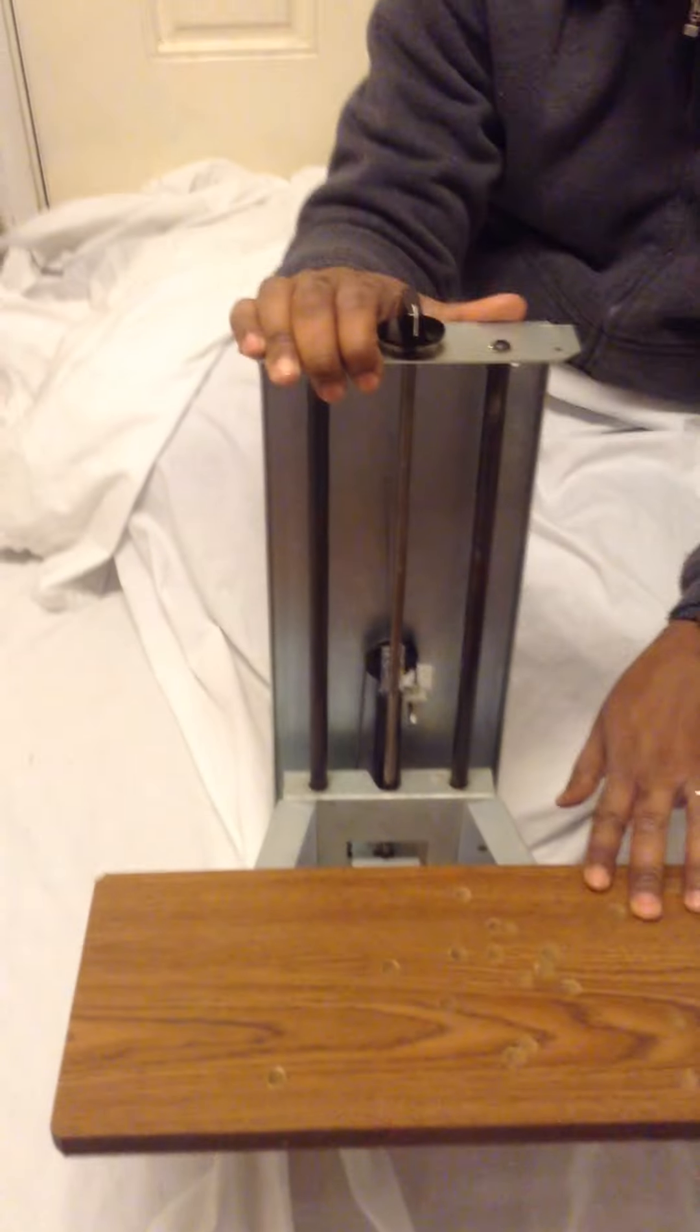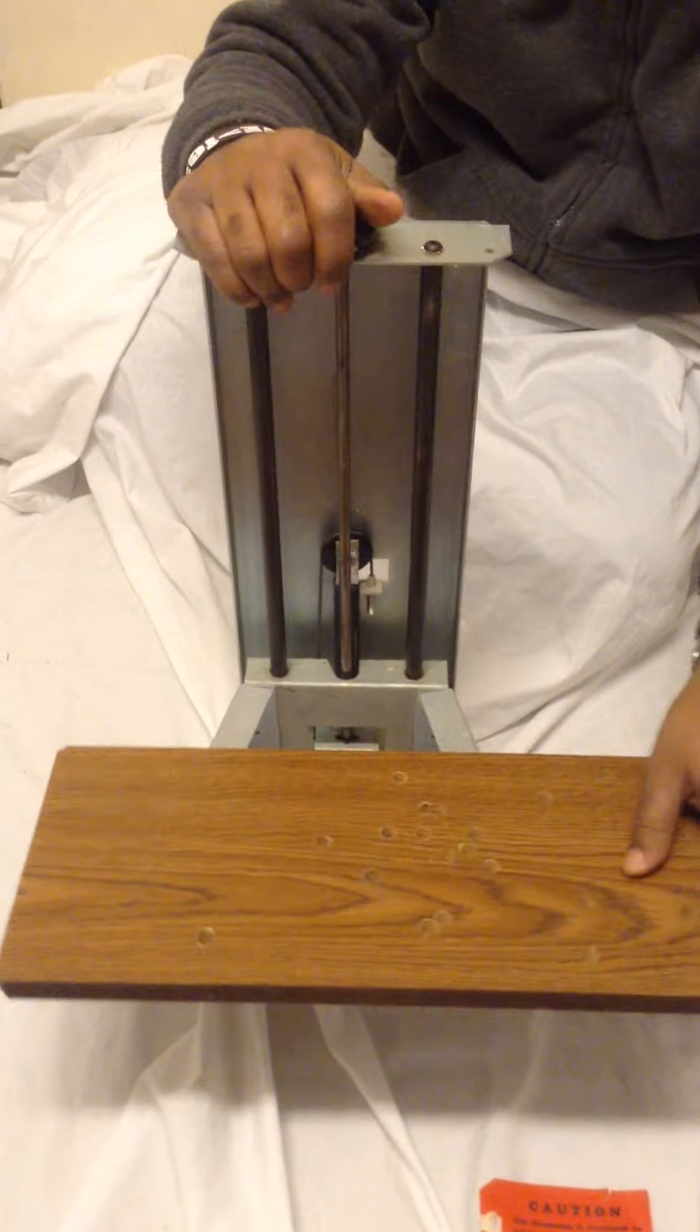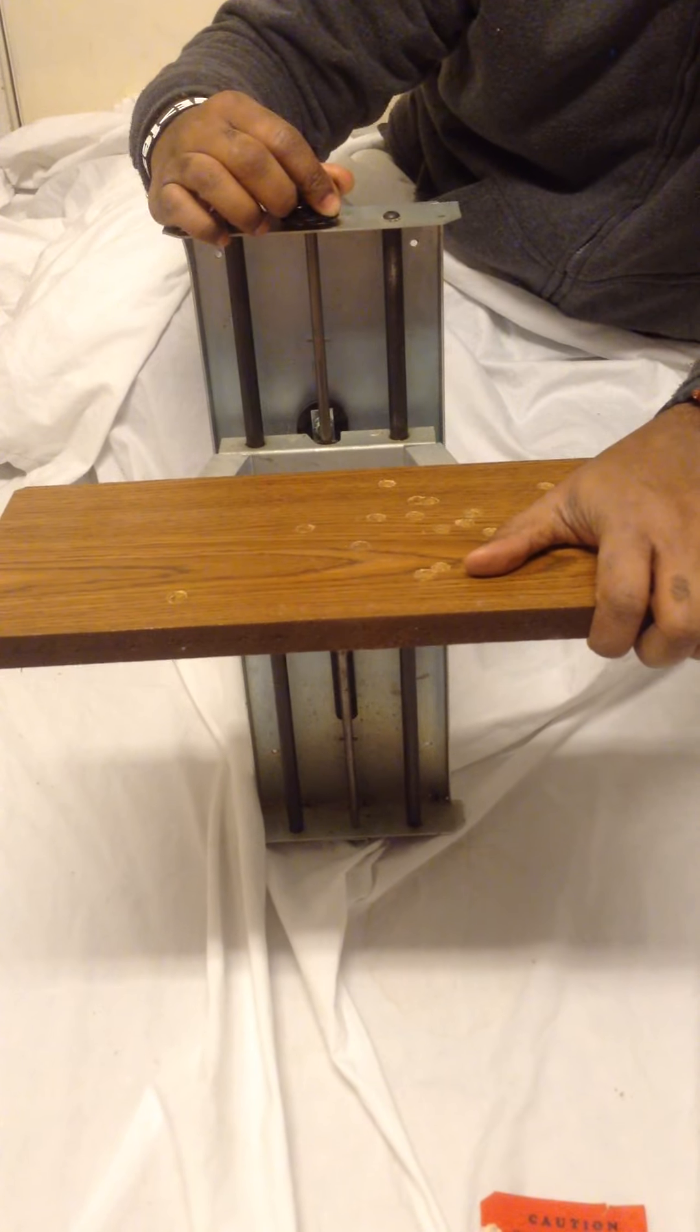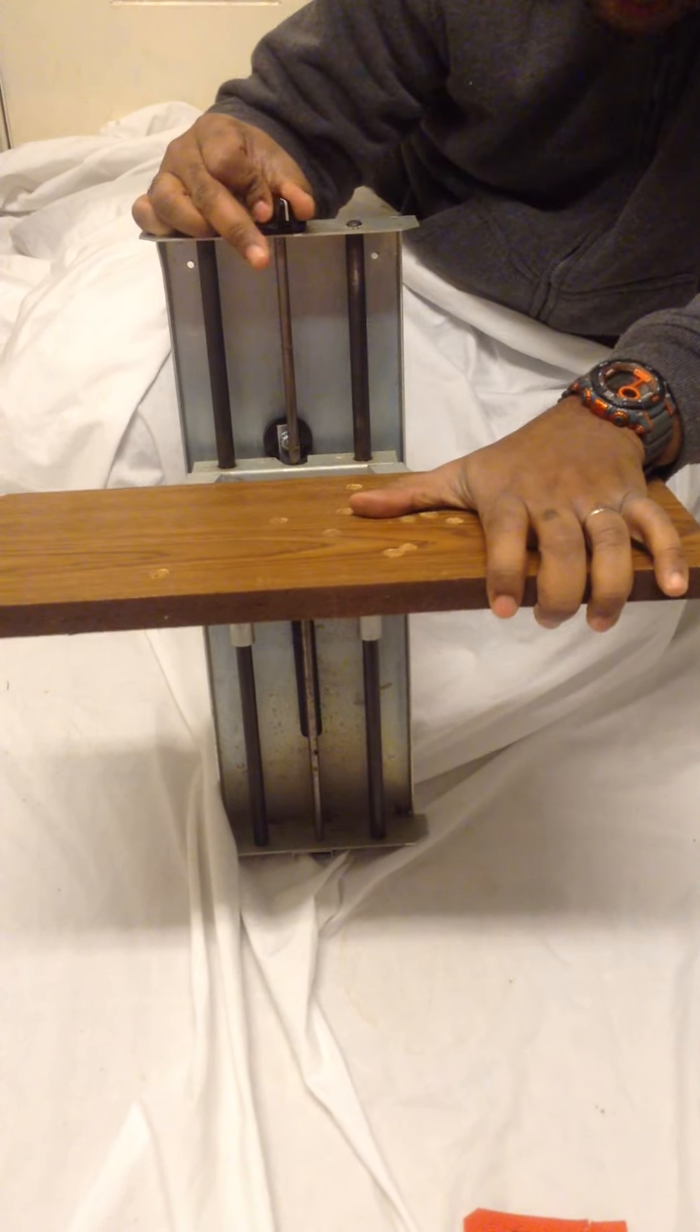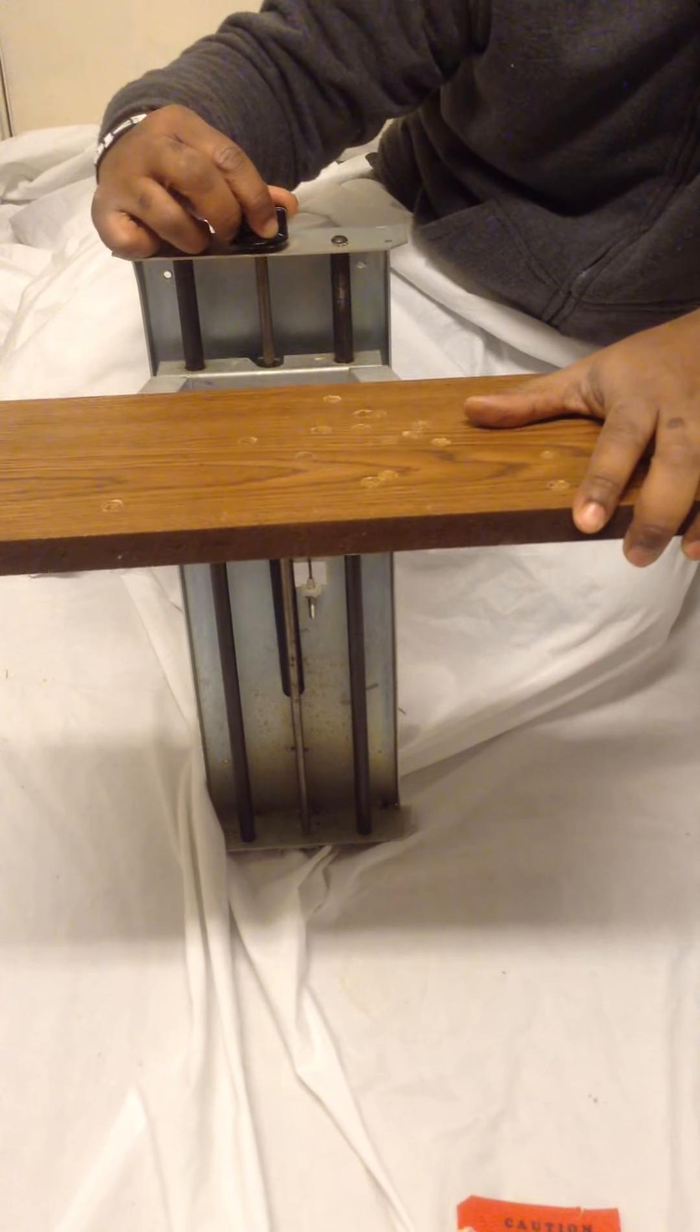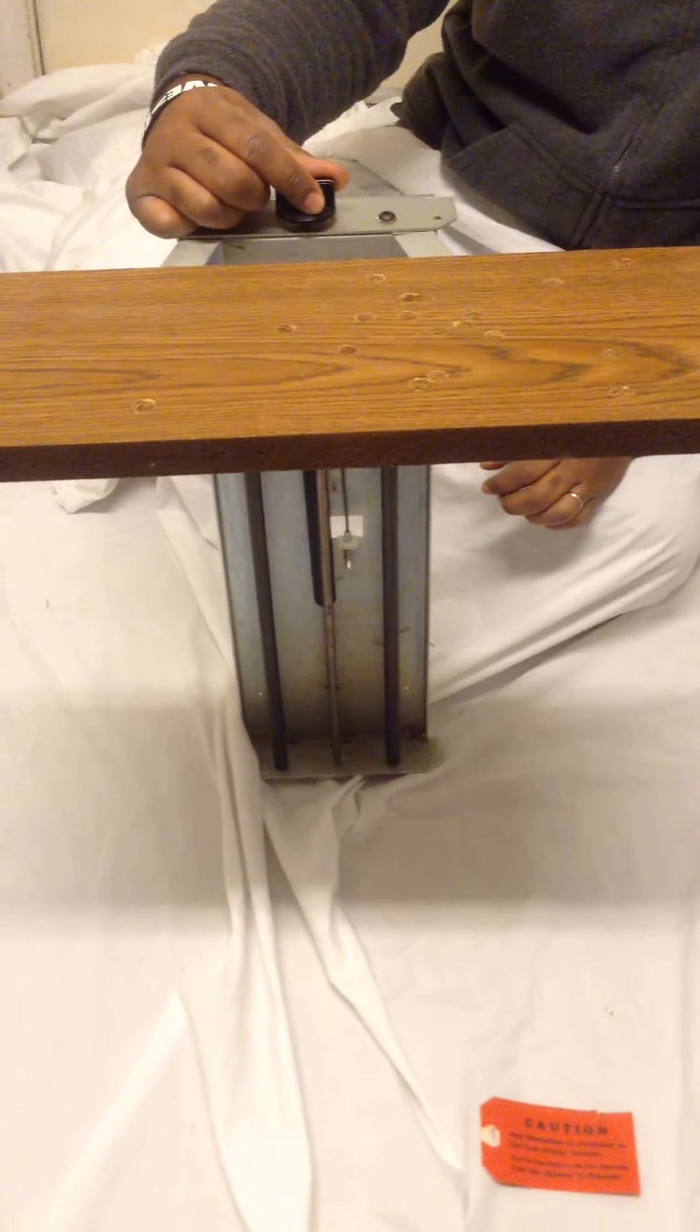The setting that it's currently in is when it's completely in the table and the table is closed. Then you can turn this knob here and bring it up to this notch if you have a taller machine. And this is when it's completely up and out at the top of the table for your own use.